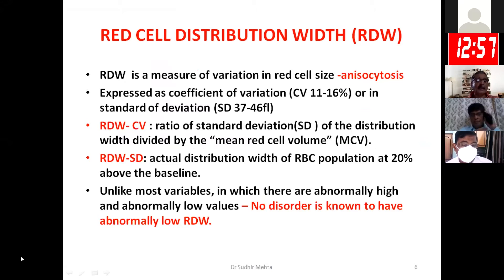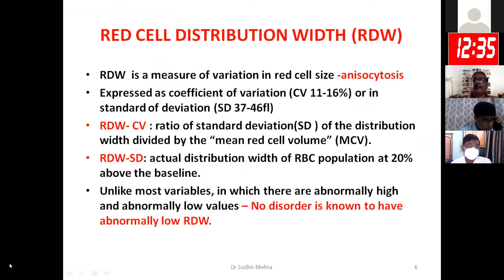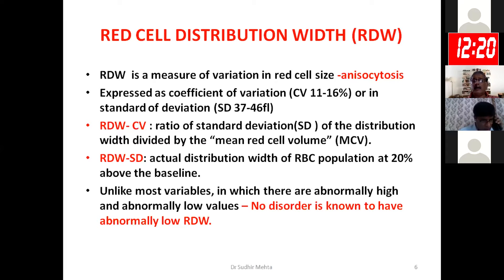What is red cell distribution width, RDW? We are all aware of the pathologist's report on peripheral smear describing anisocytosis, which means variation in red cell size. RDW gives you an objective measure of this variation in red cell size — whatever was being reported on peripheral smear was simply a subjective impression. RDW can be expressed as coefficient of variation (RDW-CV) or as standard deviation (RDW-SD).